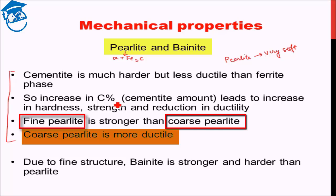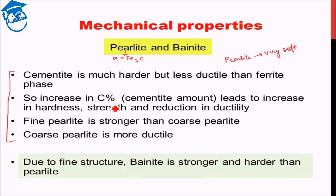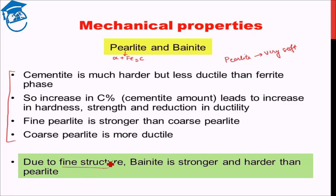What is the difference between bainite and pearlite? Bainite is a much stronger phase than pearlite and it has a fine structure. This fine structure leads to a strong and quite hard microstructure — much harder than pearlite. Bainite also has some inherent strain in it because it was cooled to relatively lower temperatures than pearlite, and that also contributes to the strength of bainite.